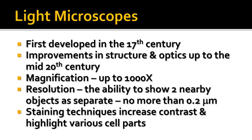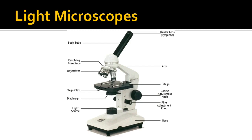We use various staining techniques to increase contrast and highlight cell parts. When we look at prepared slides under the microscope, we'll see different colors because different stains have been used to highlight parts of the cell. This is a typical light microscope, very similar to the ones we use in lab. You will need to know what all these parts are and how to use them, and we'll talk more about that when we do a microscope lab in a few days.